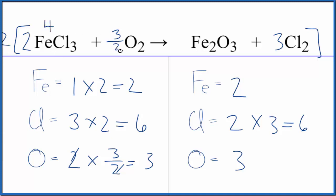2 times 3 over 2, the 2s cancel out, we get 3. 2 times the 1 in front of this compound here, that's 2. And 2 times 3 is 6.